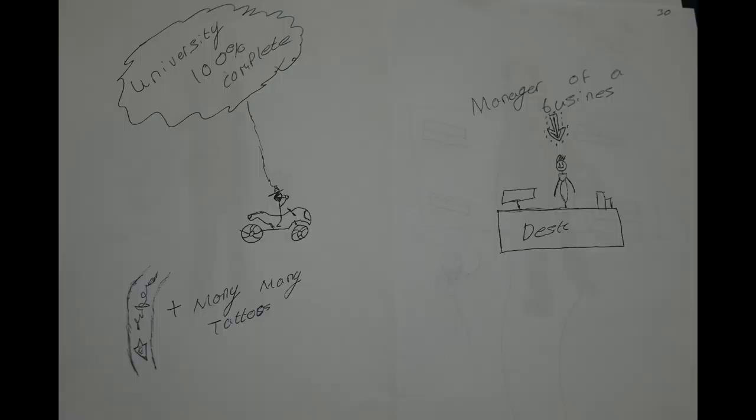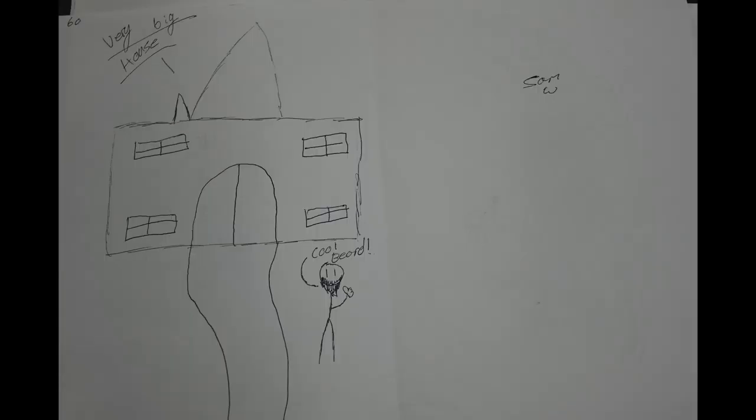At the age of 21, I hope to have completed university, got many tattoos and have a motorcycle. At the age of 30, I hope to be the manager of a business and make lots of money. At the age of 60, I hope to be retired, have a cool beard and a massive house.